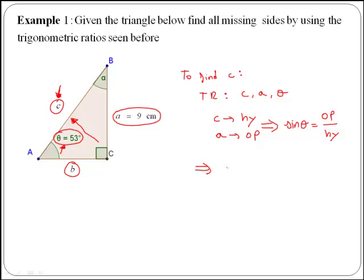So in our case, we know that sine of 53 is equal to 9 over c, and we want to get c. So if we multiply across by c, we have c by sine of 53 is equal to 9.